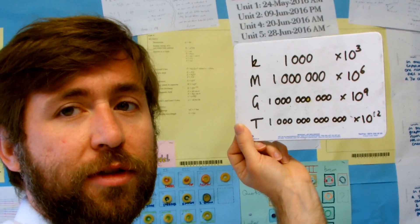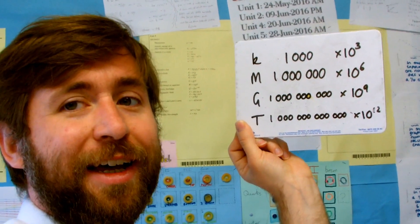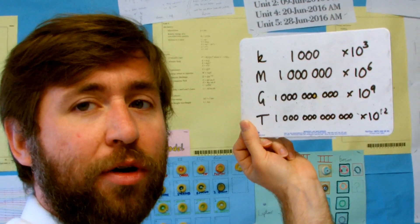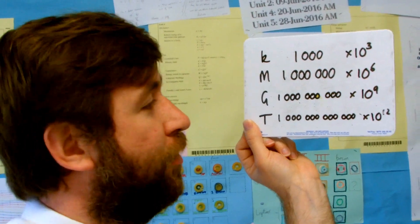I would encourage you to use that standard form button on your calculator. And tera is twelve zeros — so a trillion, or times ten to the twelve.